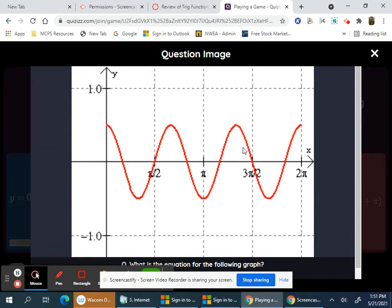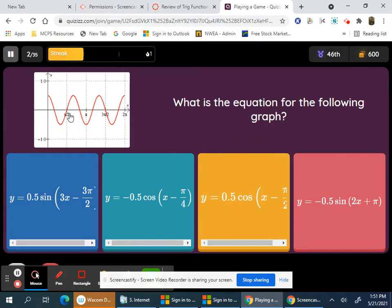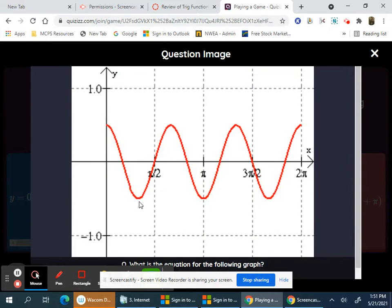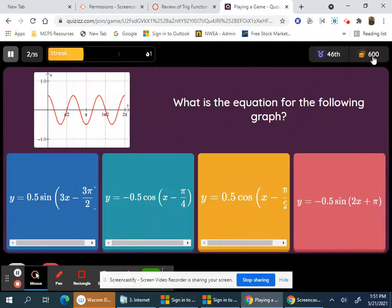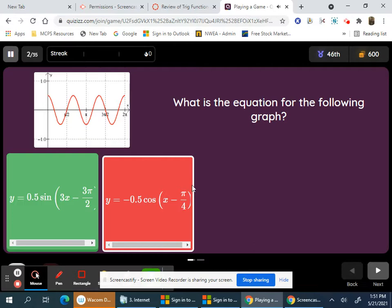What's the equation for the following graph? If I look at this graph and want no phase shift, I would use cosine. But this is using phase shift here, so phase shift for sine would be pi over 2. That's not it. But for cosine, a negative cosine would be pi over 4 would be the phase shift. So it's this one.